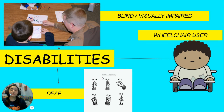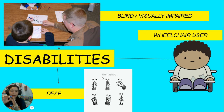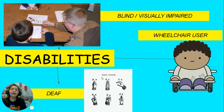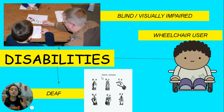Again, we have three kinds of disabilities: blind or visually impaired — you cannot see; wheelchair user; and deaf — you cannot hear, so you gotta use sign language.